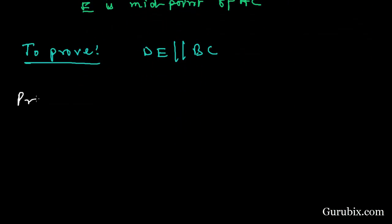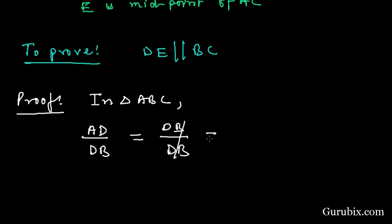This is the proof. We shall start with triangle ABC. In triangle ABC, we are given first of all let us find the ratio of AD over DB. But AD is equal to DB, so we can write here DB. This is DB. We can cancel it out. This is equal to 1.